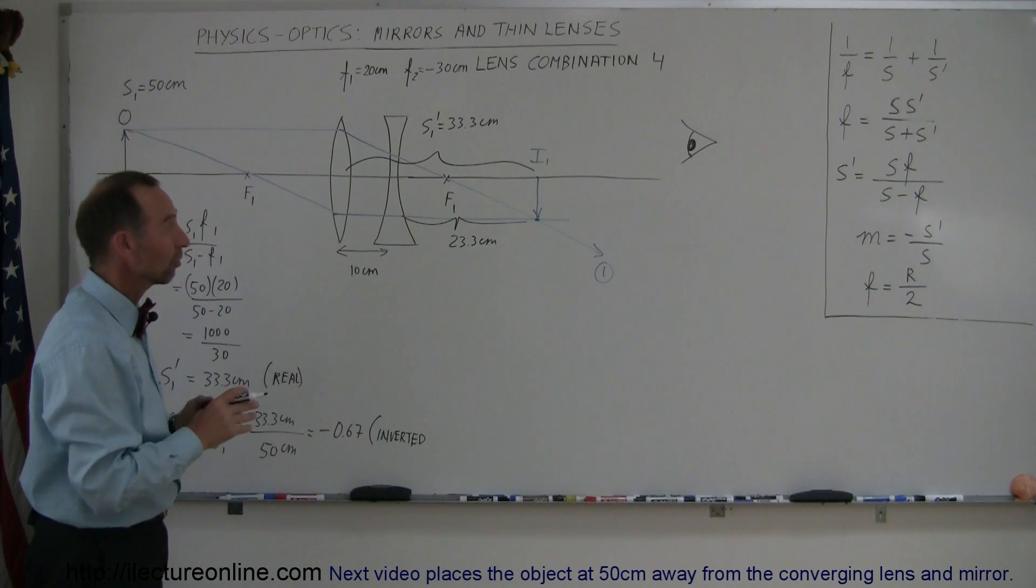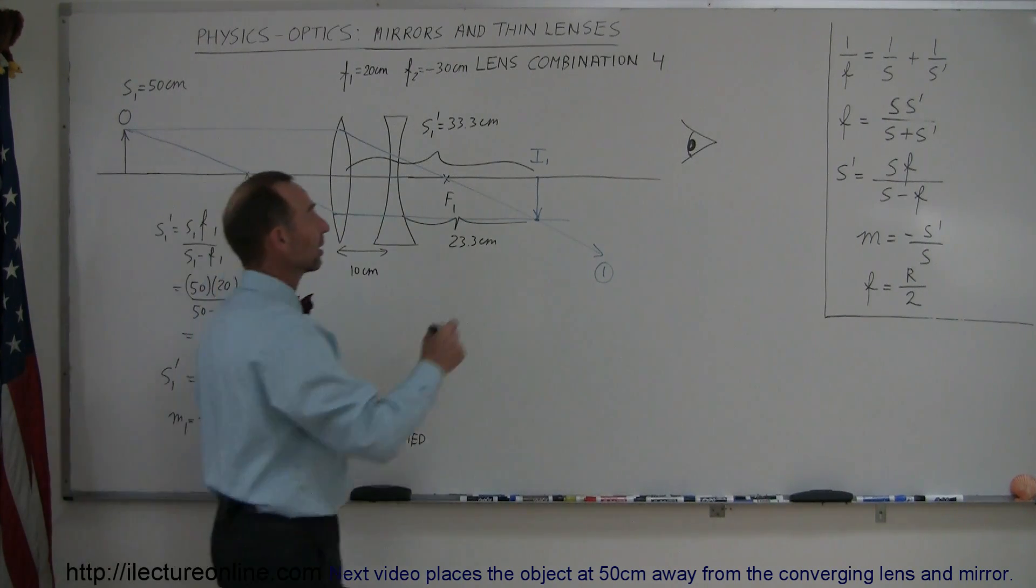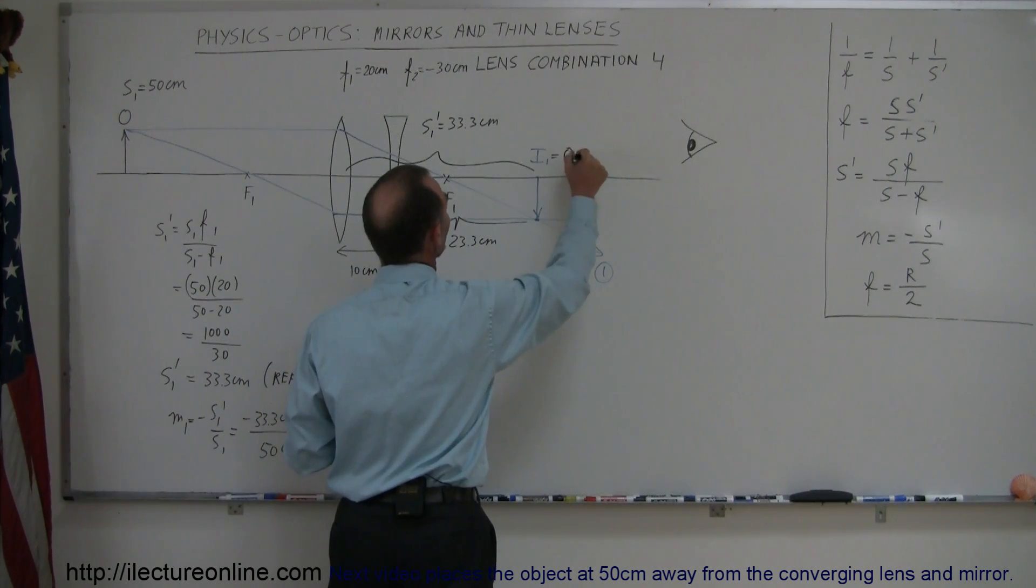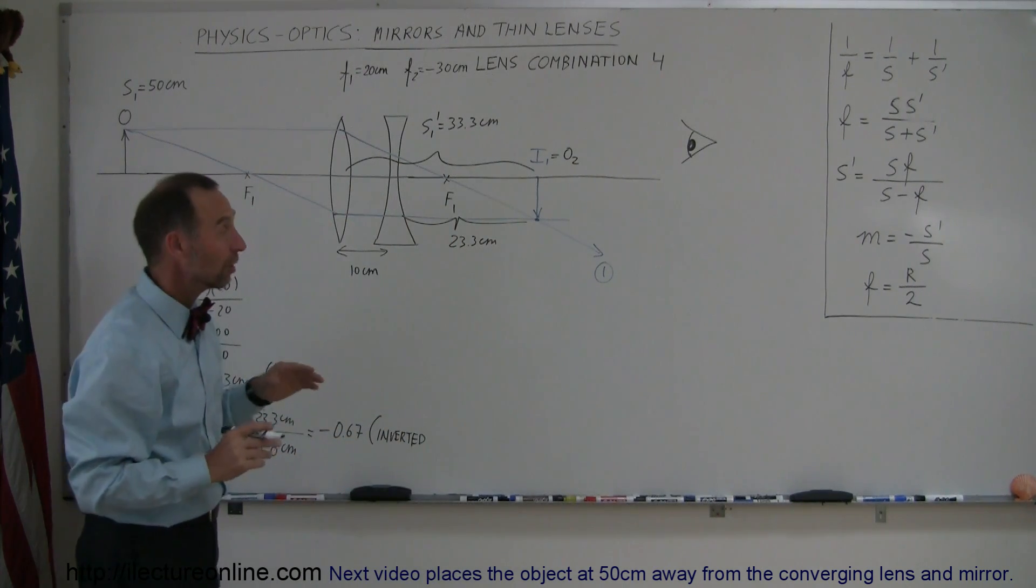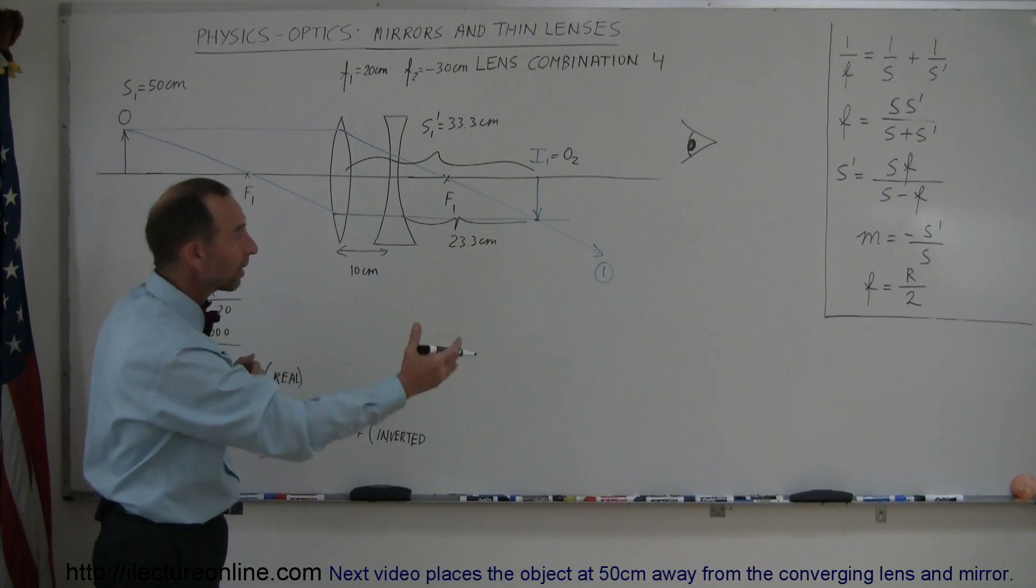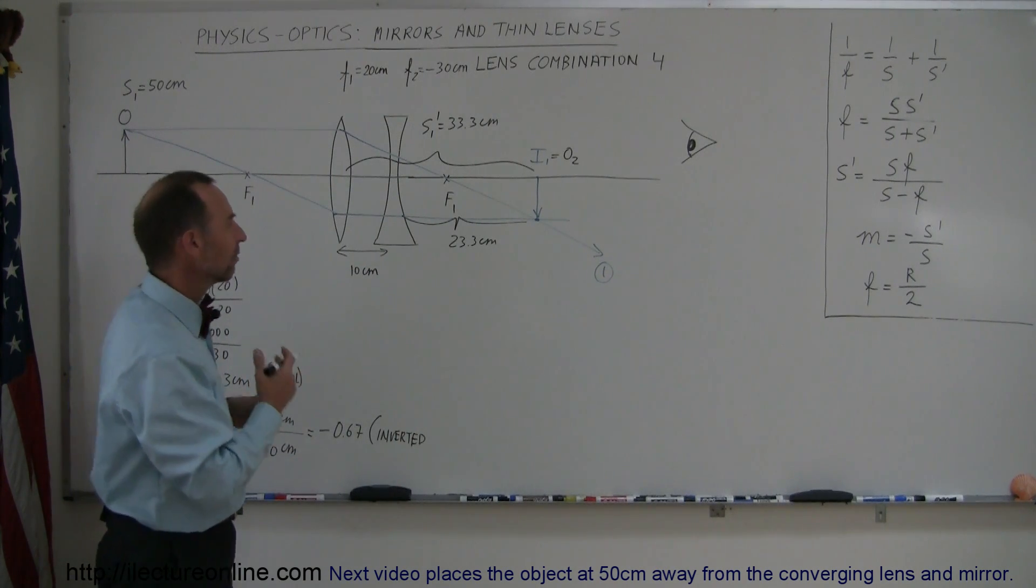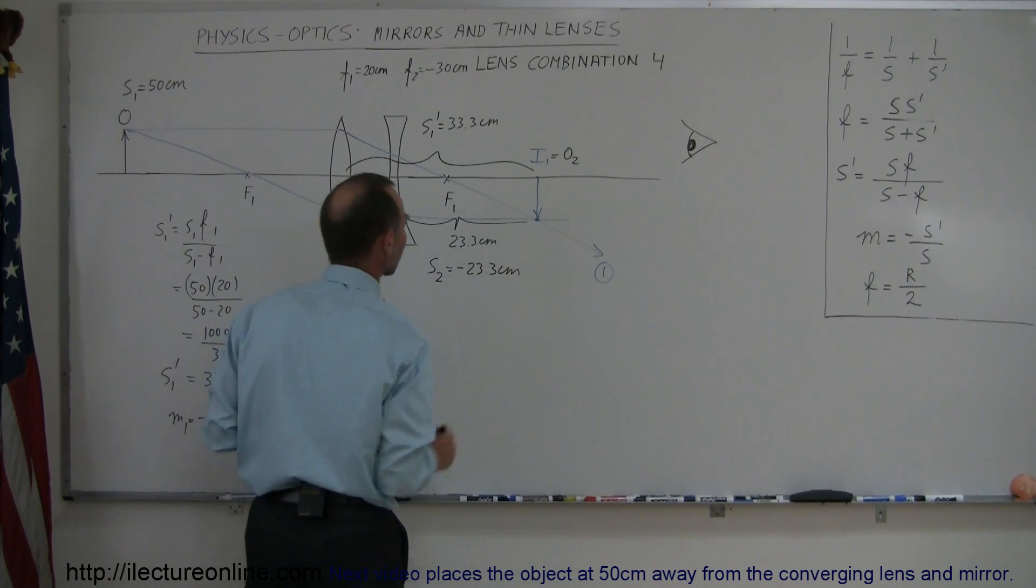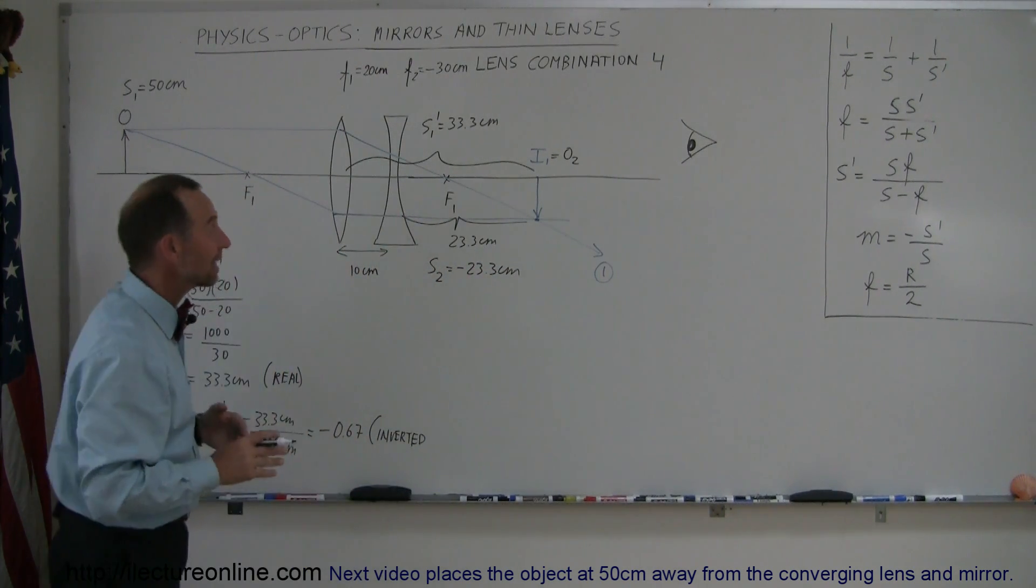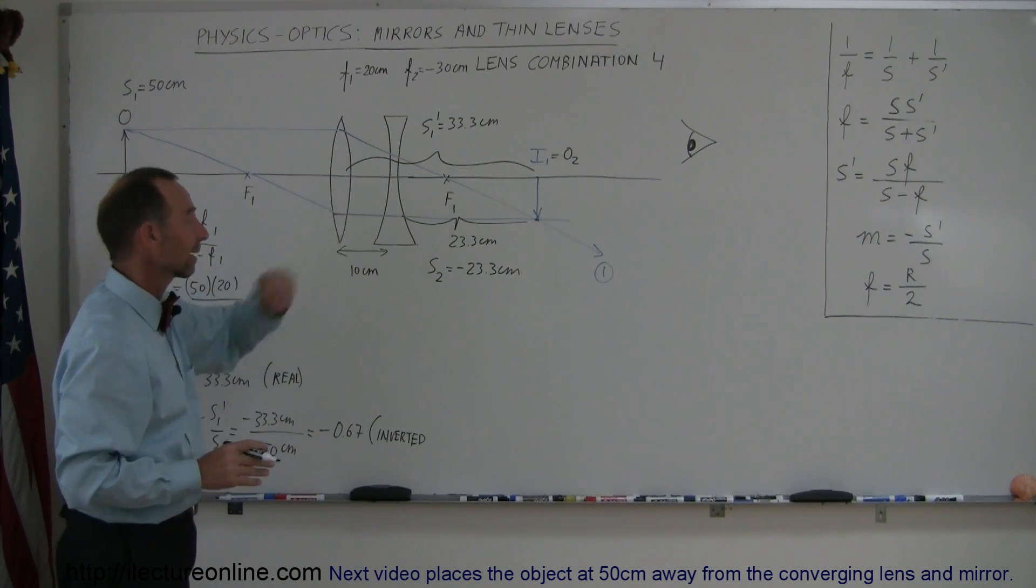Now remember that the image of the first lens becomes the object of the second lens. So this equals object 2, which means this is the object distance 23.3 centimeters. But since the object is to the right of the lens, behind the lens, it's a negative object distance, so S2 equals minus 23.3 centimeters. Now we're ready to find the second image caused by the second lens.